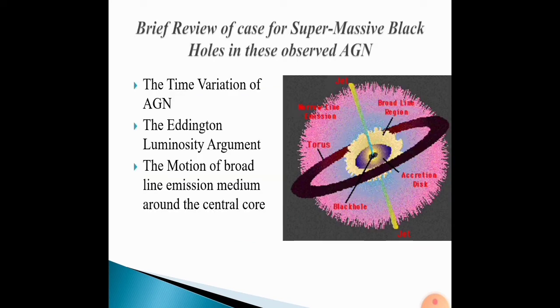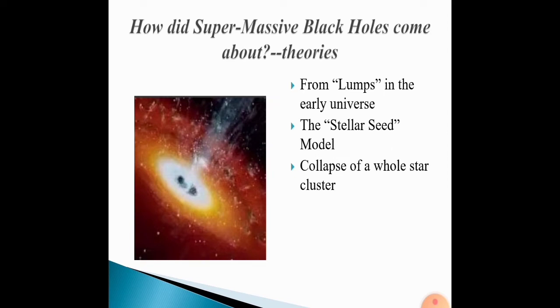Brief view of the case for supermassive black holes in these observed AGN: the time variation of AGN, the motion of broad line emission medium around the central core. How did supermassive black holes come about? Theories: from lumps in the early universe, the stellar seed model, collapse of a whole star cluster.